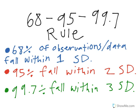It's known as the 68, 95, and 99.7% rule. What you have to remember is that 68% of your observations or data fall within one standard deviation, 95% fall within two standard deviations, and 99.7% fall within three standard deviations. That will make more sense once you see what a bell curve actually looks like.